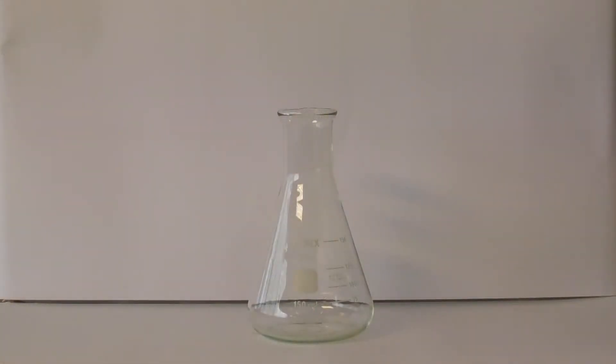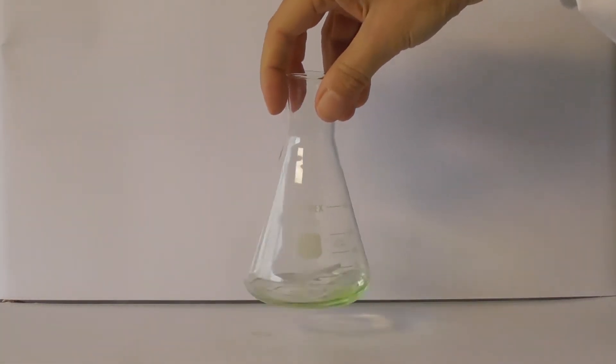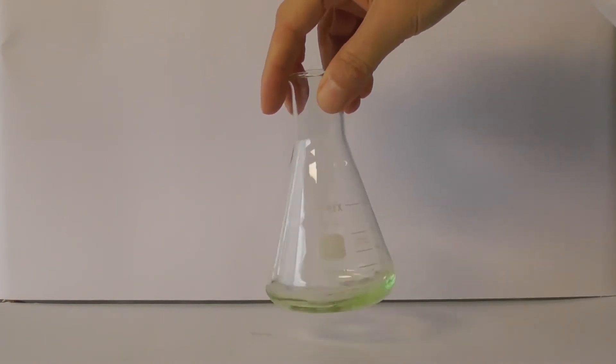This flask looks clean, but as we add our solution, residue left behind is dissolved into the solution, contaminating it. Here, that residue is colored, so it's easy to see. If it were colorless, as a lot of residues are, you won't know if your solution is contaminated until it's too late.